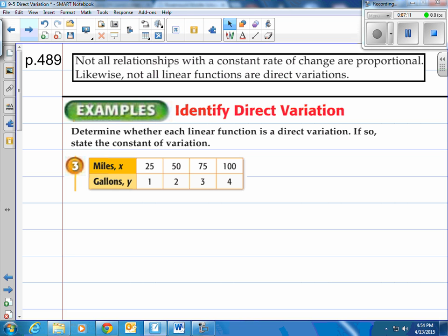Alright, not all relationships with a constant rate of change are proportional. Likewise not all linear functions are direct variations. How do we determine that? Glad you asked because here we are. We're going to figure it out here. Identify direct variations. Determine whether each linear function is a direct variation. If so, state the constant of variation.